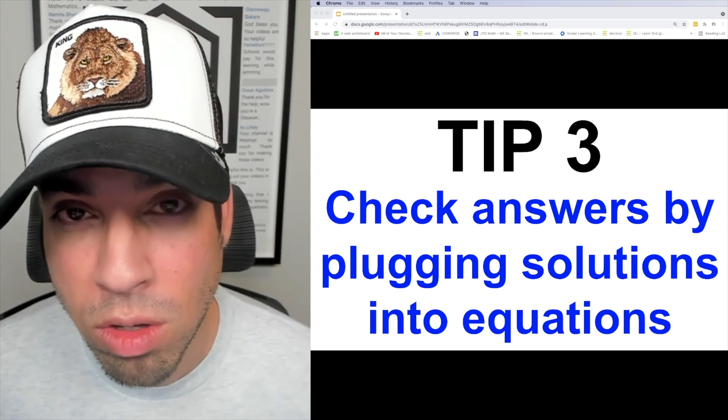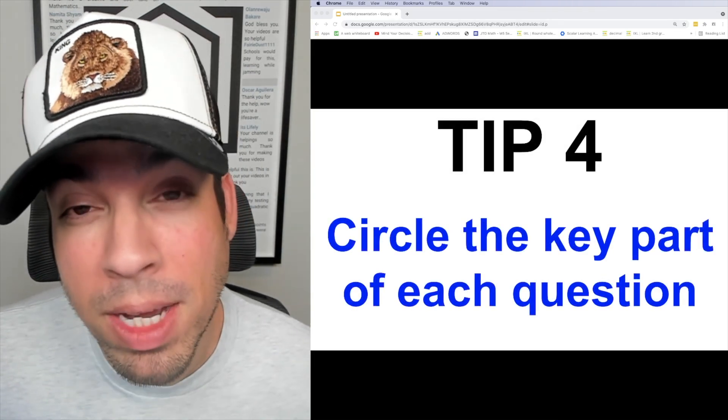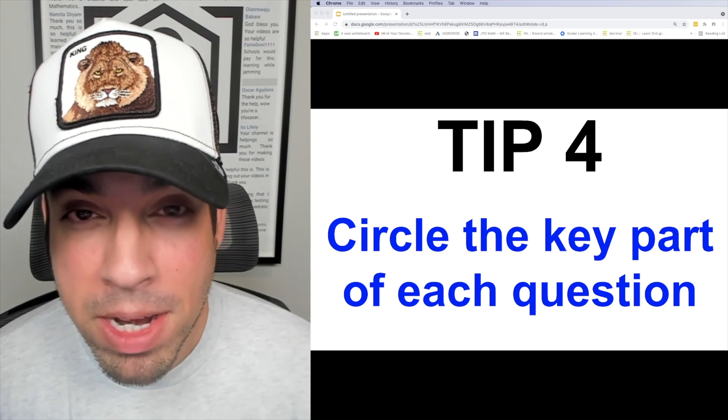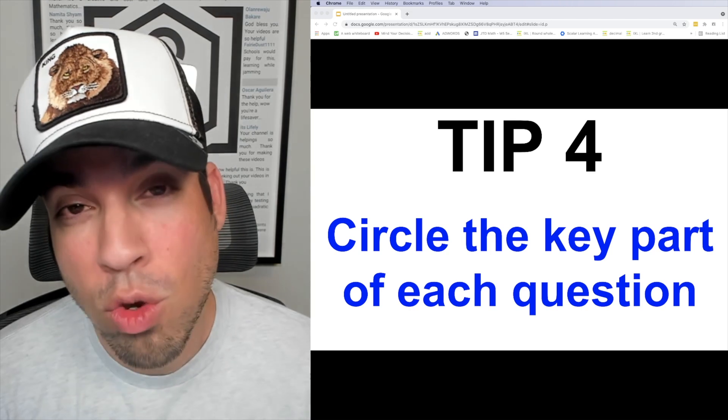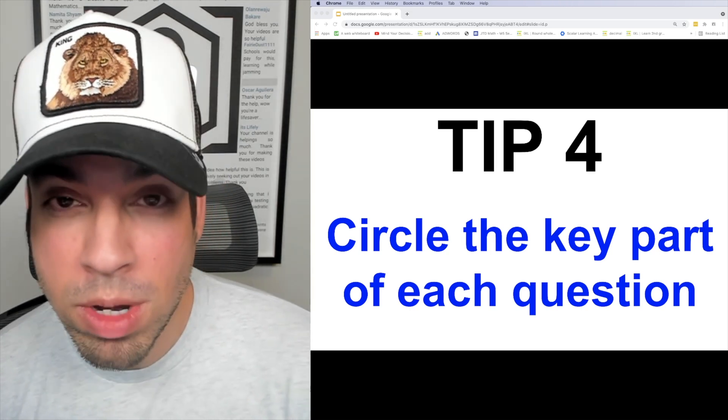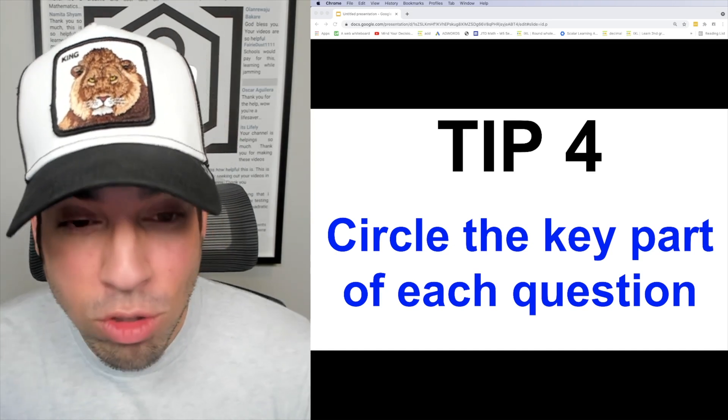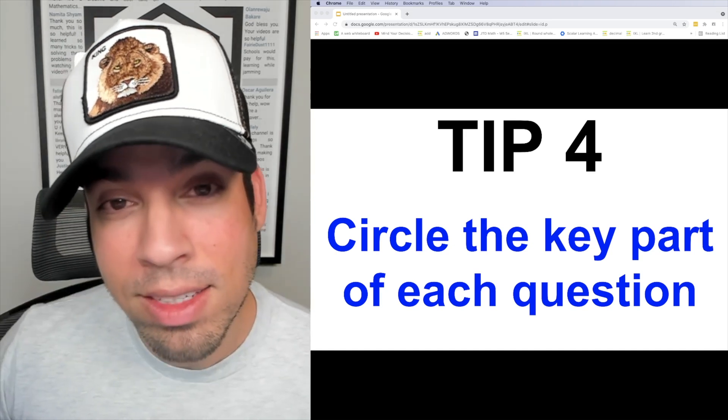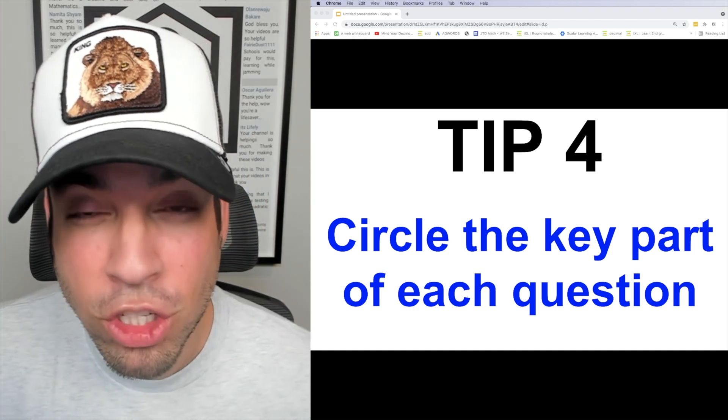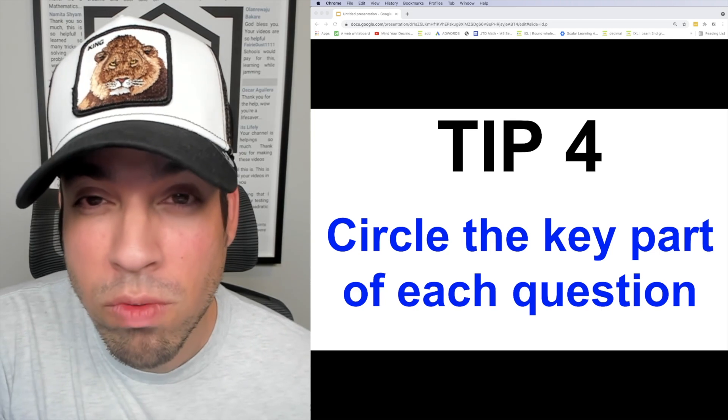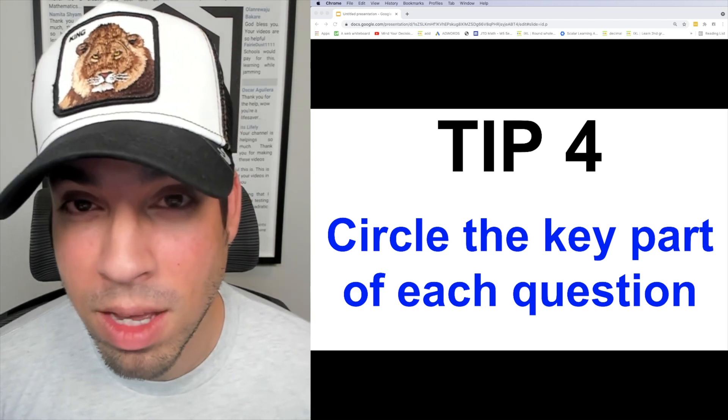Tip number four is to circle the key part of each question. So what do I mean by the key part? I mean that very end. So for example, in some cases where you're having to solve for x, the question will actually be asking for 3x or x plus 4 or x plus y. And you want to make sure not to miss that because they'll usually have an answer choice that is simply x or is simply y. By circling that end part of the question, you're going to make sure that you don't gloss over that key element. If they want 4x, you're going to get 4x. Boom, done.